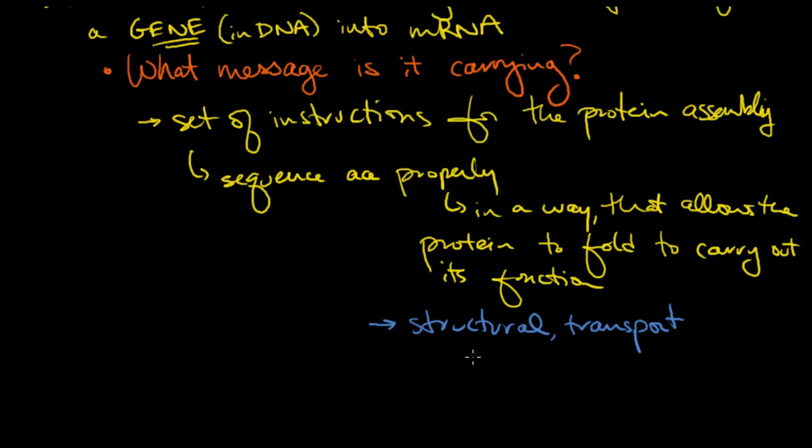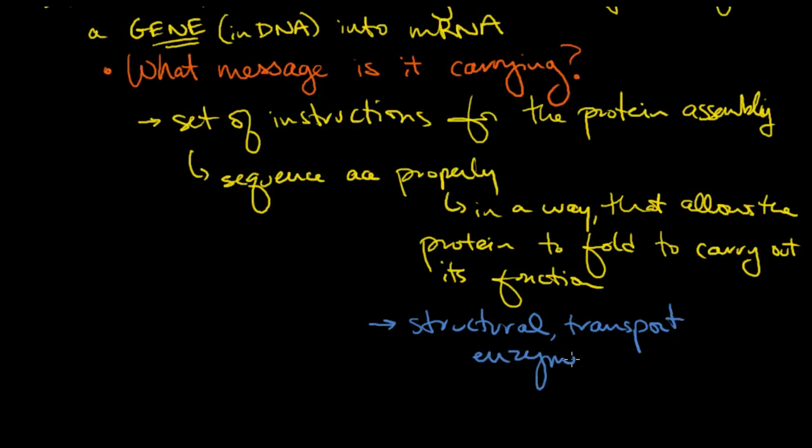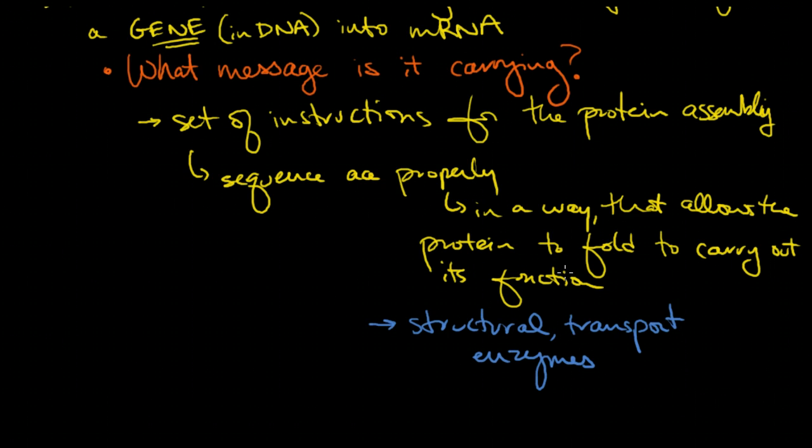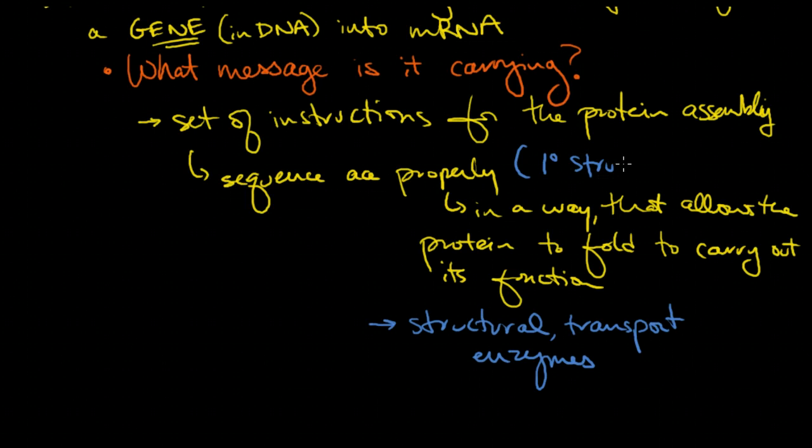We've got enzymes that speed up reactions. These are different kinds of proteins. I just wanted to point out that when we talk about function, they could be lots of different functions. But that's very much dependent on the sequence of amino acids, and the sequence of amino acids, just as a reminder, is what we call primary structure.